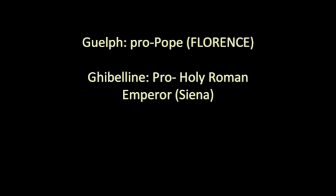During the Gothic period, Italy was really splintered into different factions. Two of those factions were the Guelphs and the Ghibellines. For the most part, the Guelphs were in favor of the Papacy — Florence is a Guelph town. The Ghibellines were in favor of the Holy Roman Emperor up in Germany, and Siena is a Ghibelline town.